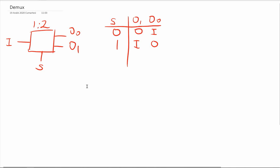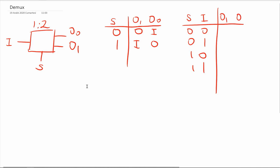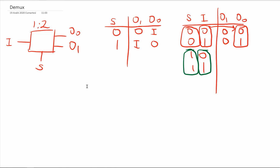We can also write the truth table for this D-multiplexer. I have S and I as inputs, so I have four possibilities, and my outputs are output 1 and output 0. If select is 0, my I input goes to output 0, giving combinations 0,0 and 0,1 for S=0. If select is 1, my I signal goes to output 1, giving 0,1 and output 0 is 0.